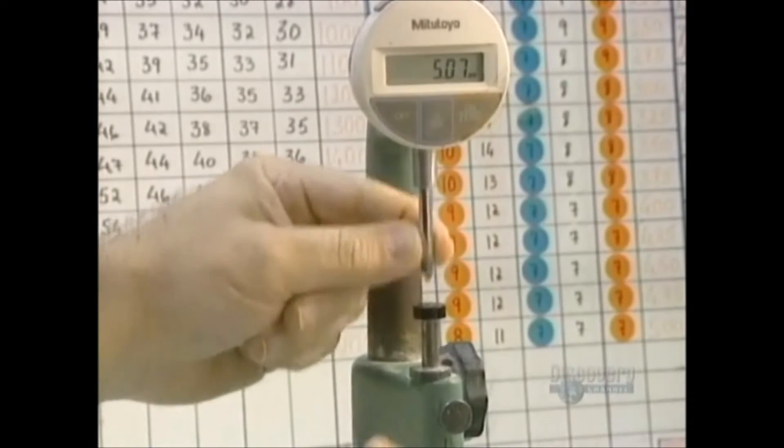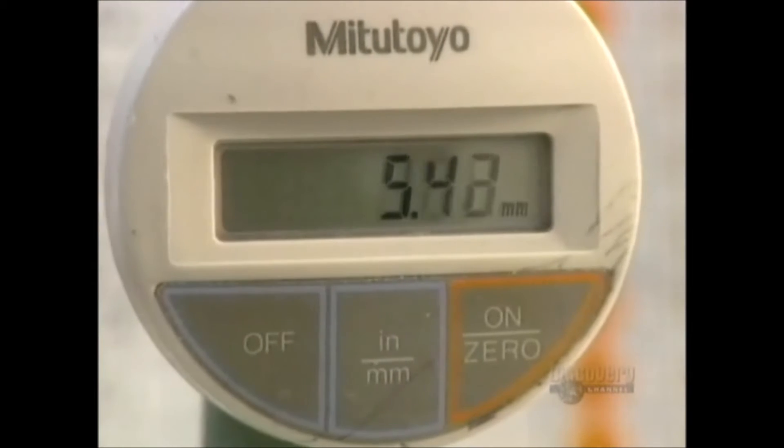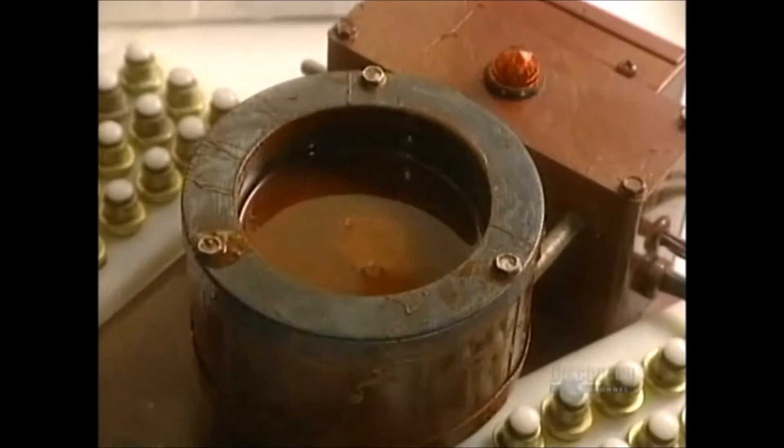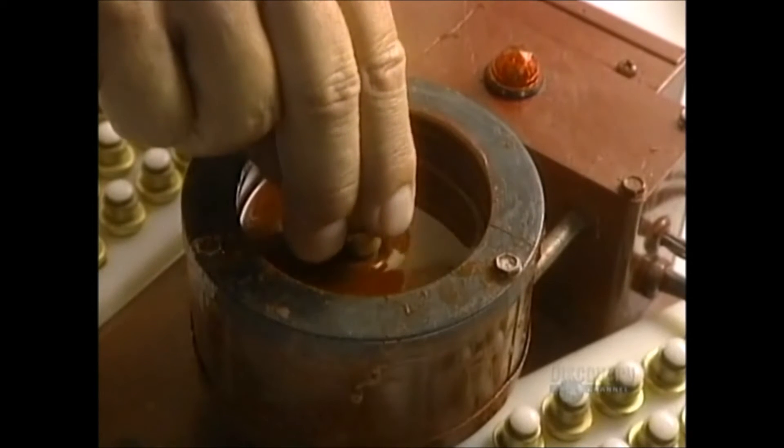A technician measures lens thickness with an extremely precise gauge. They now shape the outer surface, the part which touches the eyelid.